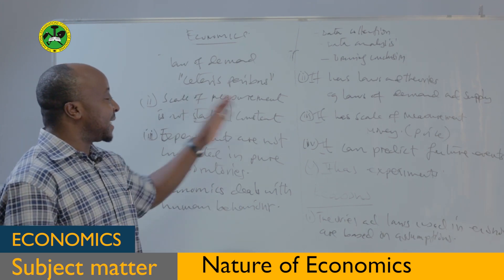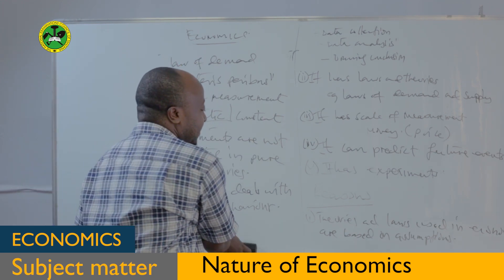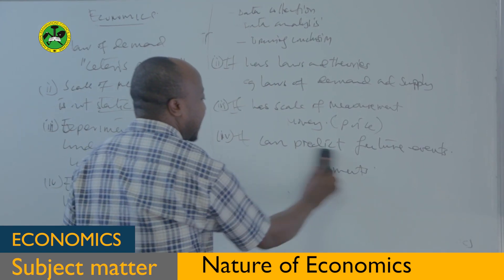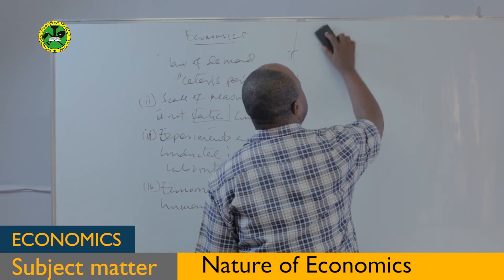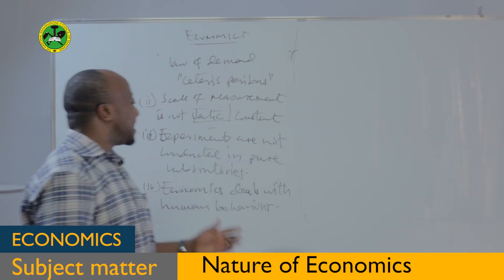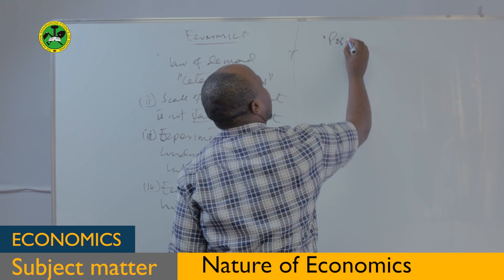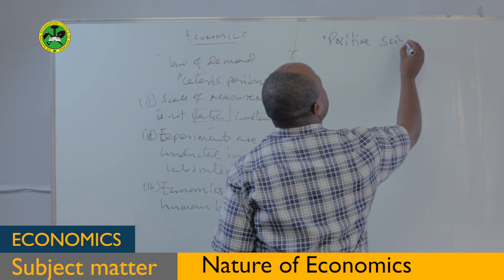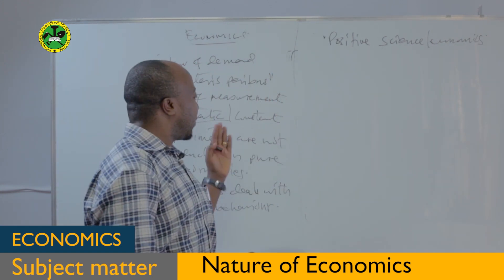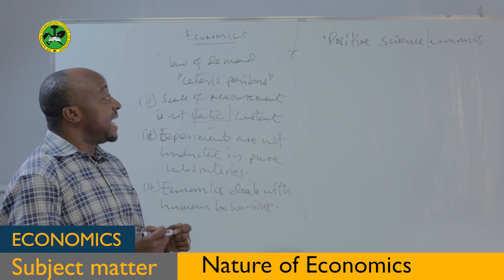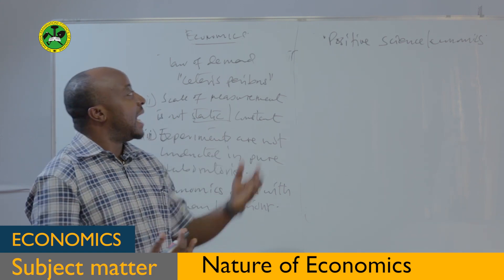Having seen these reasons, we can see that economics is a science that can be studied in two approaches. The first approach is to study or view economics as a positive science — positive economics. The second approach is normative economics. Economics as a science subject can be explained in these two approaches.